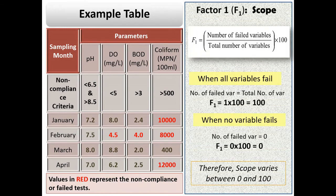When all the parameters pH, DO, BOD, coliform count fail to meet the standard at least once, then total number of variables is equal to number of failed variables and scope becomes 100. Now, if no parameter has any value that failed to meet the standard, then number of failed variables is equal to 0 and scope becomes 0. Therefore, scope varies between 0 and 100.